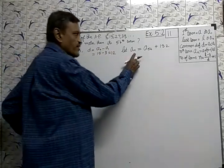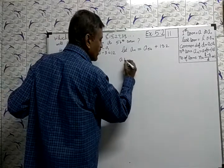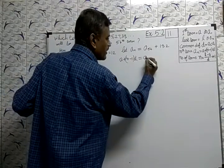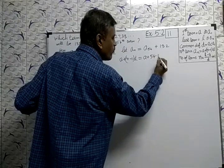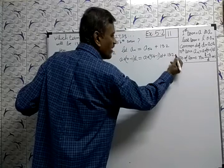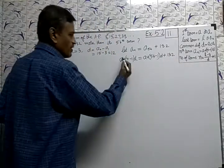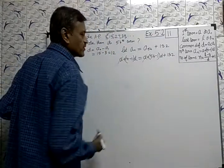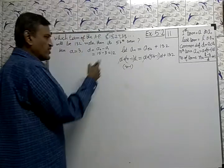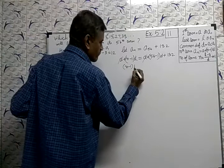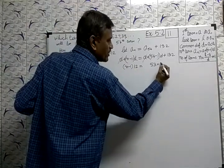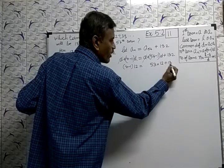We have to find what is N. What is N formula? A plus N minus 1 into D. Here, A plus 54 minus 1 into D, 132. A, we can cancel. N minus 1 into, what is D here? 12. N minus 53 into 12 plus 132.